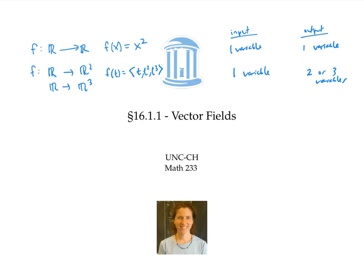We call those kinds of functions vector functions or vector valued functions, because we're thinking of their output as being a vector in R two or R three. And in fact, we emphasize their vector output by putting a little vector arrow sign above the function name.